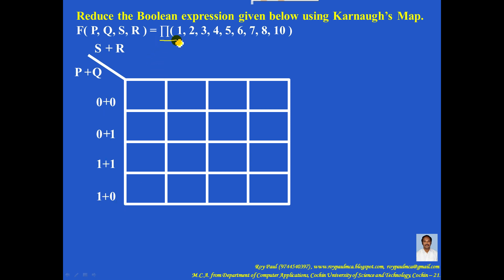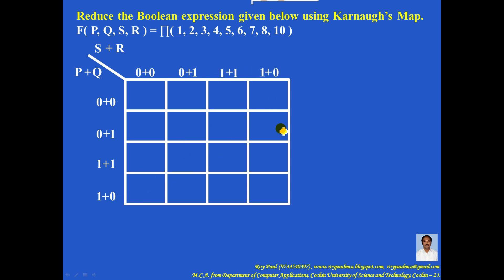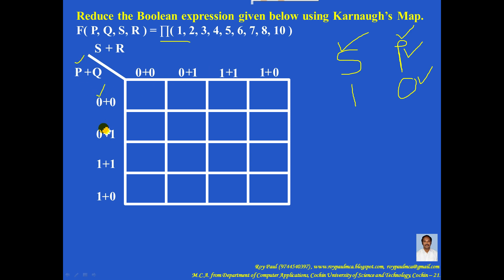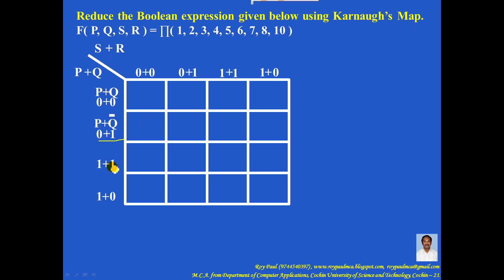PI means every term is a plus term. So you can write 0 plus 0, 0 plus 1, and so on. The same combination must be written here: 0 plus 0, 0 plus 1, 1 plus 1, and 1 plus 0. Now, PI means it is product and sigma means it is sum. In alphabetical order P comes first compared to S, and in ascending order 0 comes first compared to 1. So in the case of PI or product, 0 is given importance, which means 0 should be replaced with a variable and 1 should be replaced with a complement. So you can write P plus Q, P plus Q complement, P complement plus Q complement, P complement plus Q.